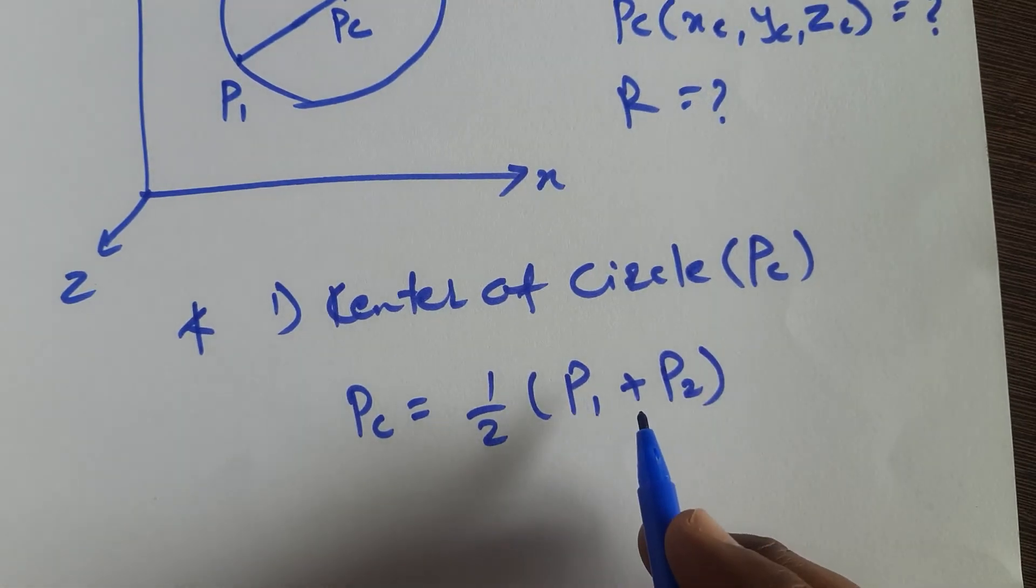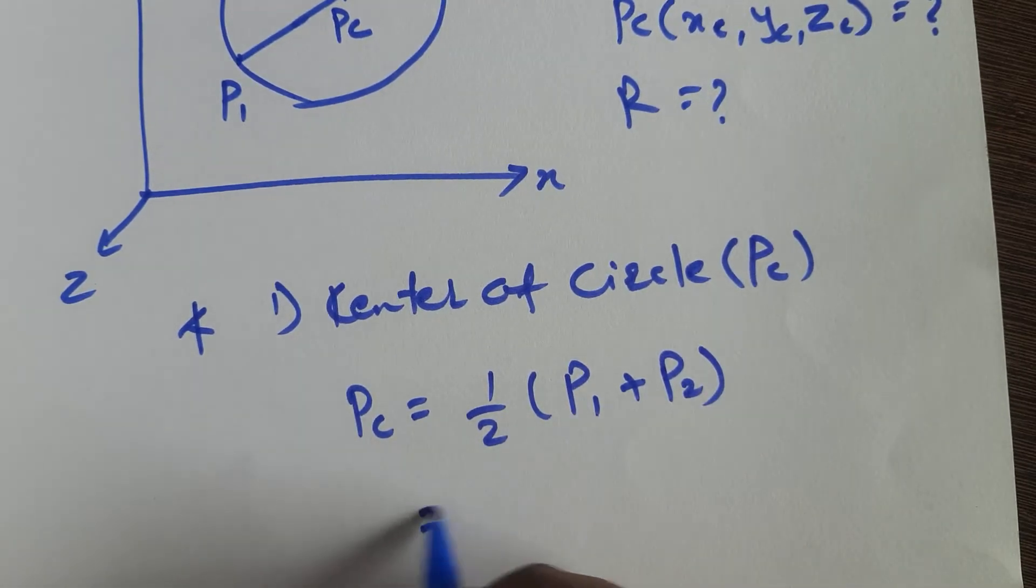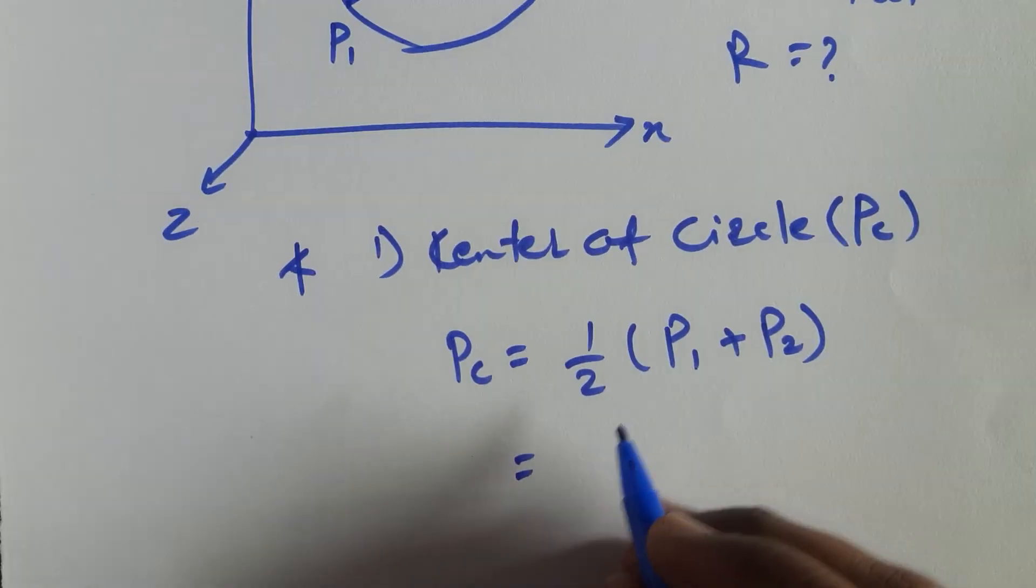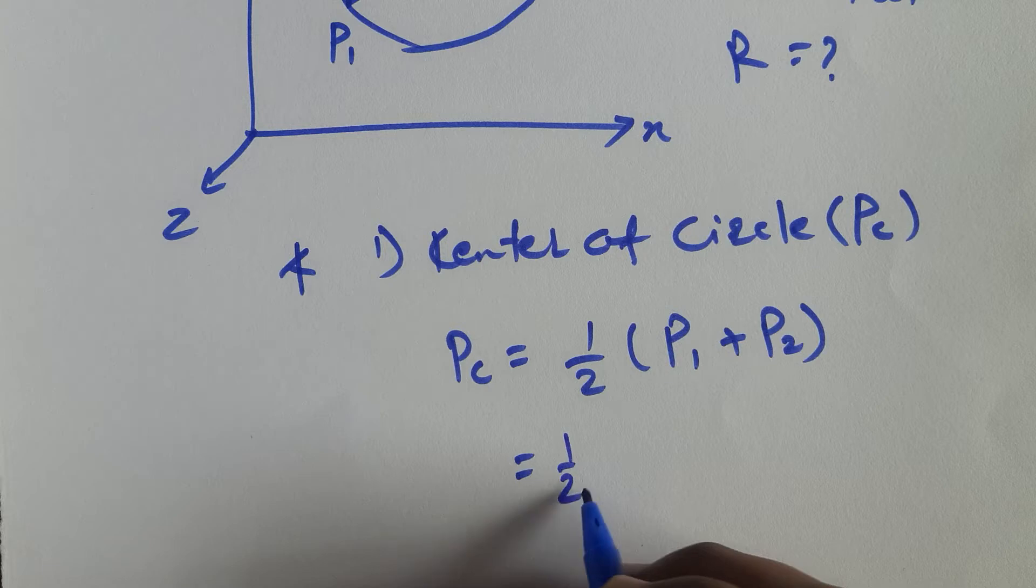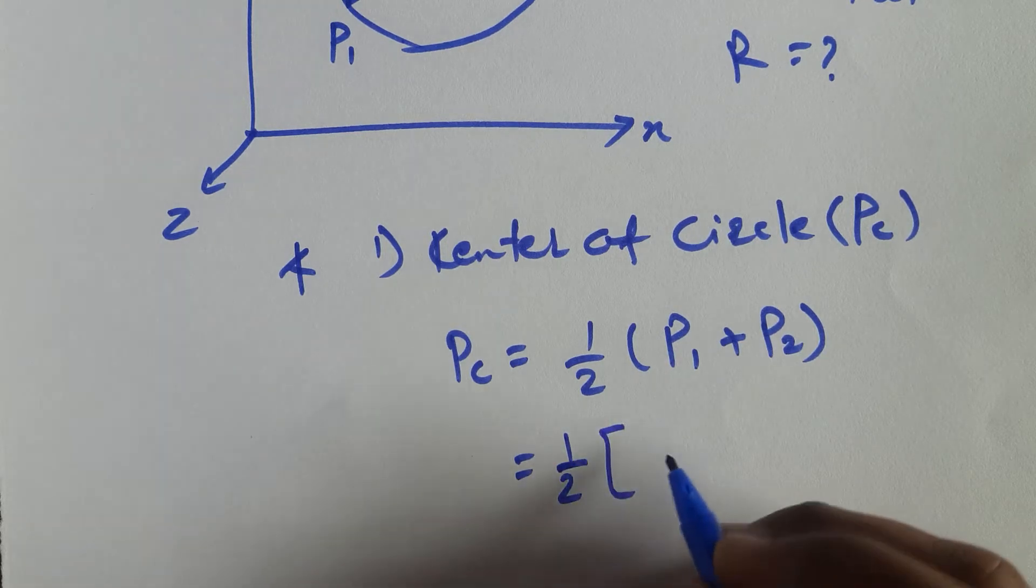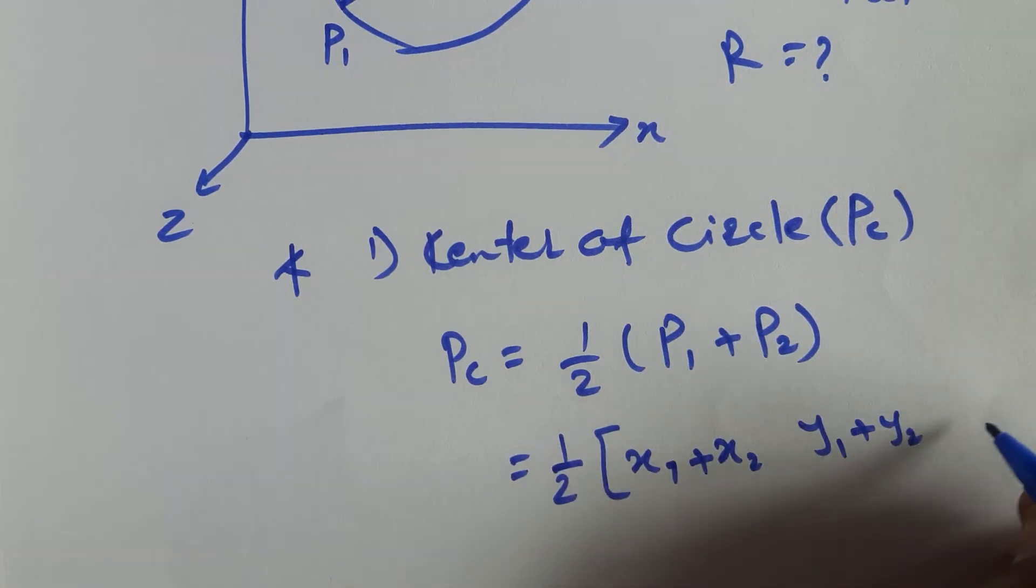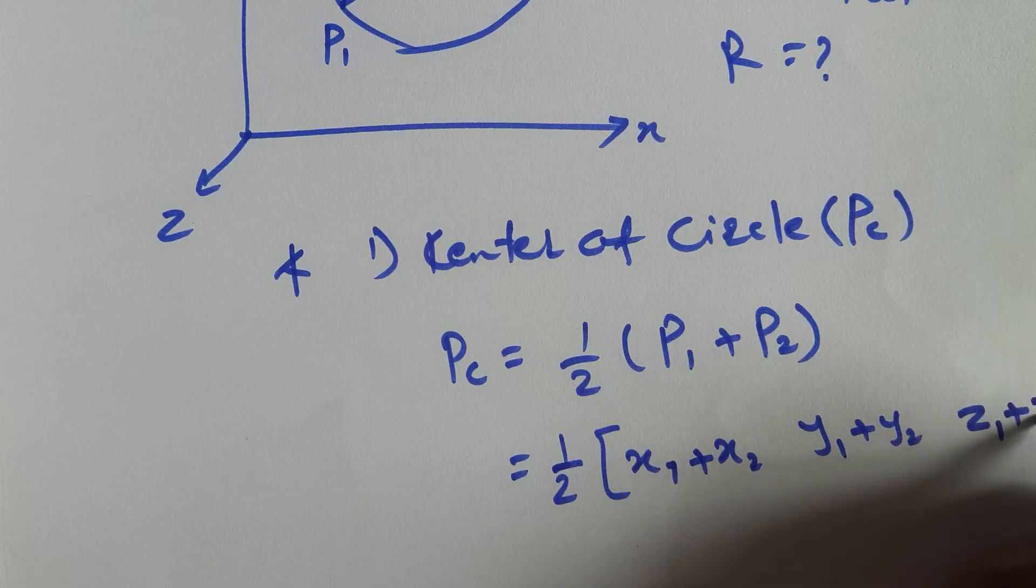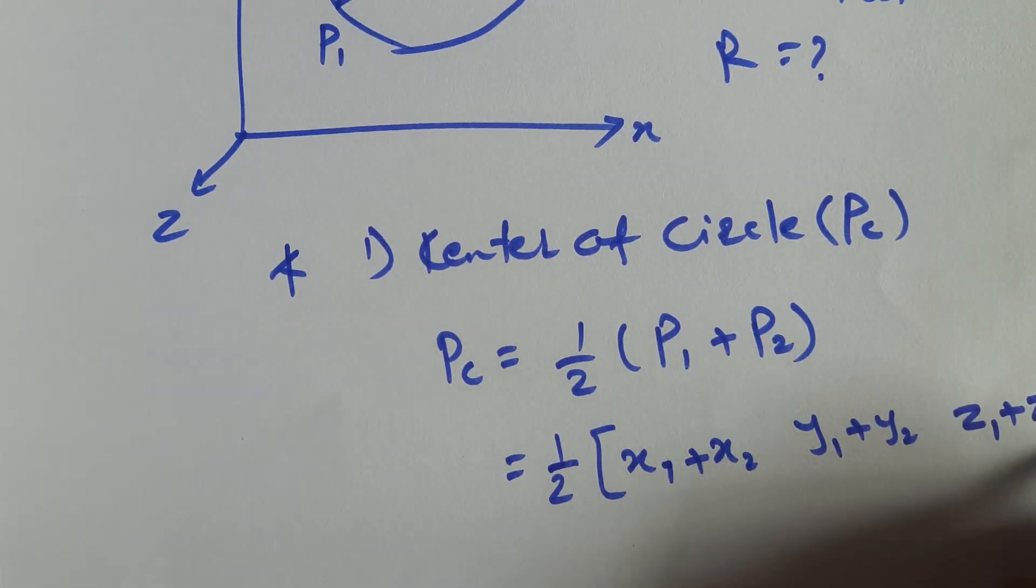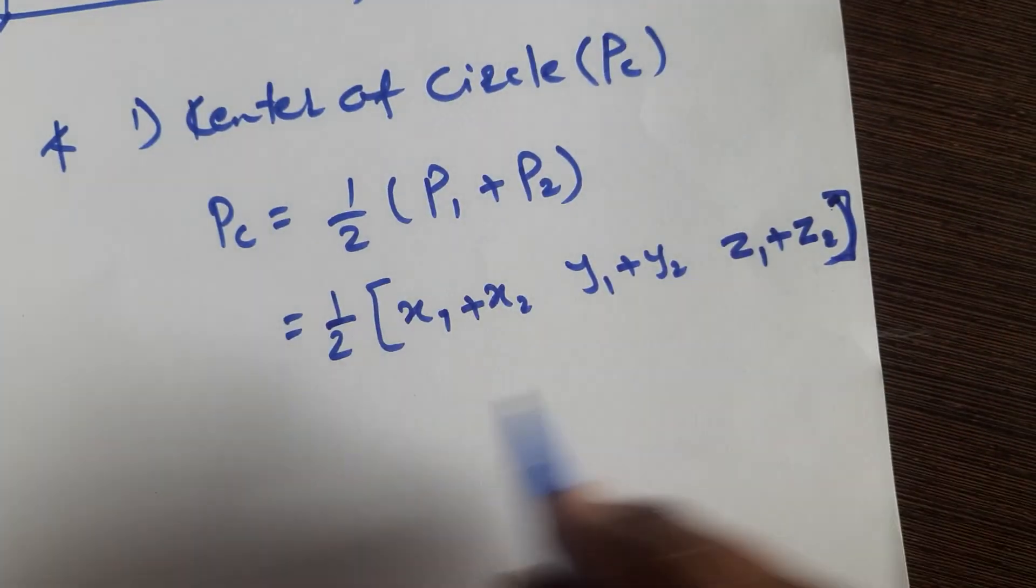Now here, Pc is equal to half, or you can write half out of the bracket: (x1 + x2, y1 + y2, z1 + z2). So this will be the coordinates.